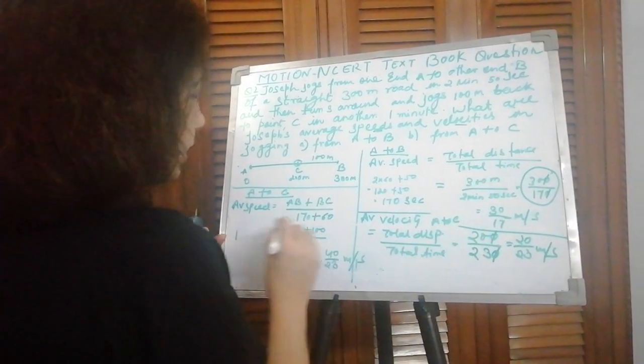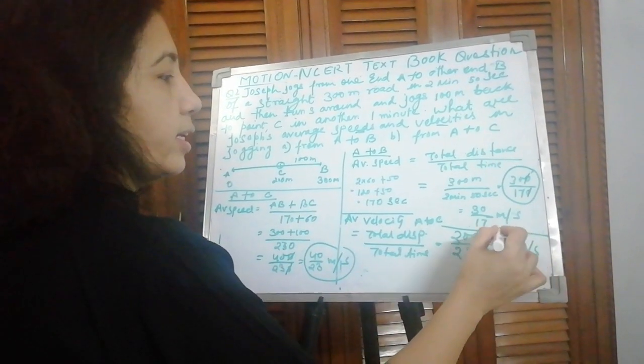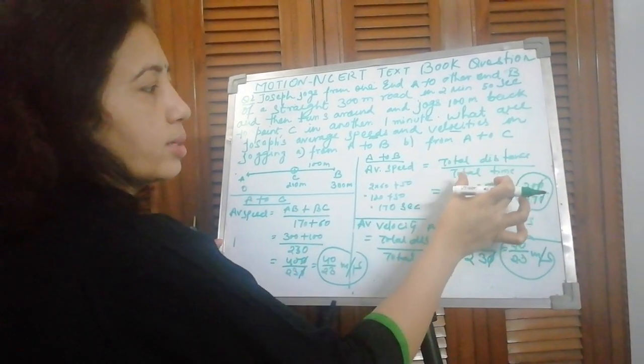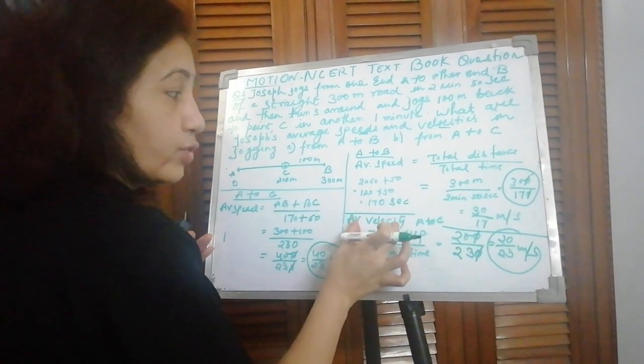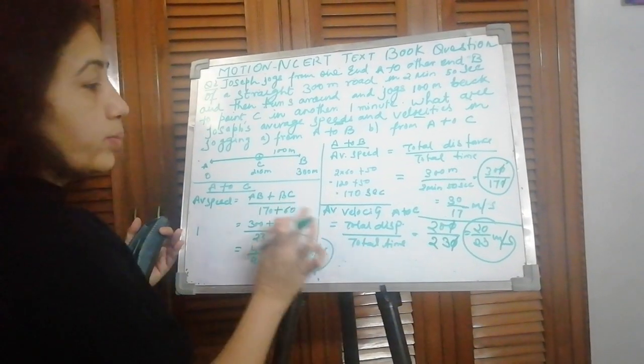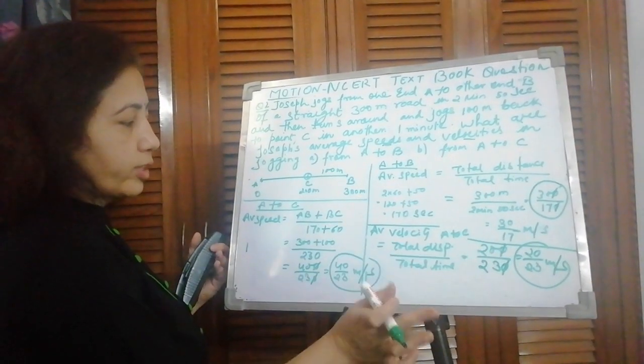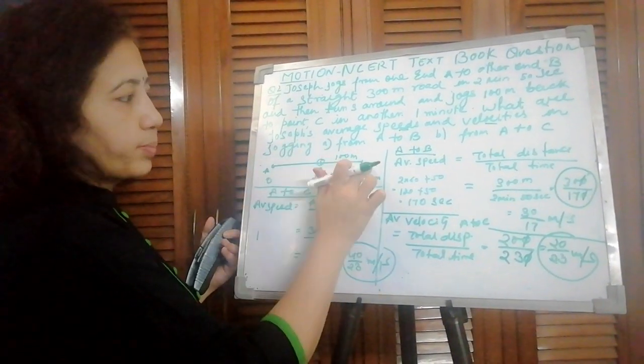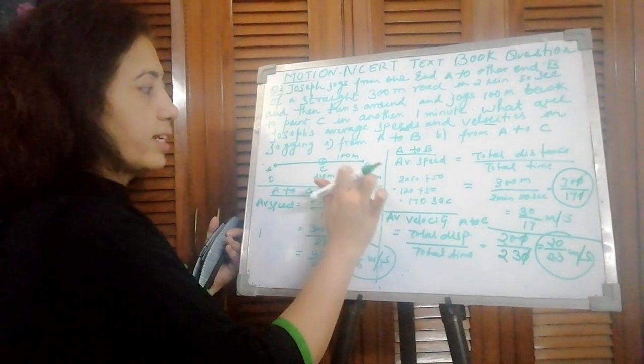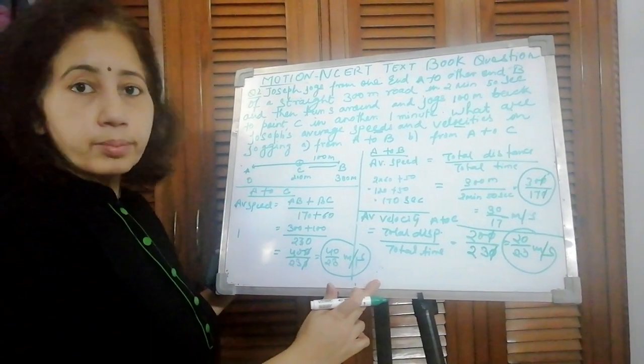So first is average speed A to B, this one. Average velocity A to C is this one. Whenever we calculate average speed, we take total distance upon total time. And whenever we calculate average velocity, we take total displacement upon total time. Displacement is shortest distance: where he started and where he ended, the distance between these two is 200. Total distance: he went to B, 300, then came back 100 to C, so that is 400.